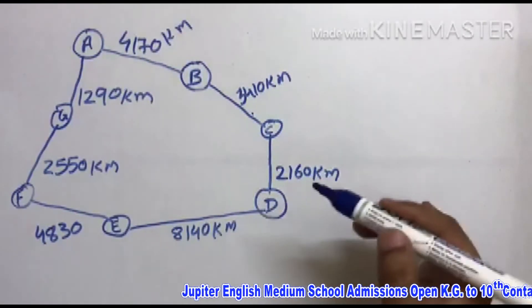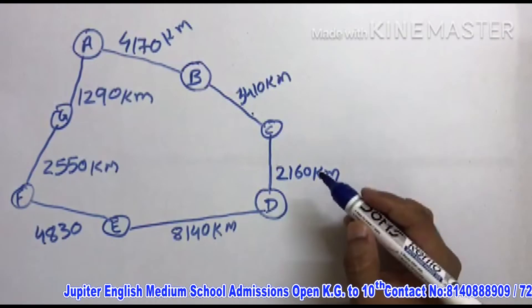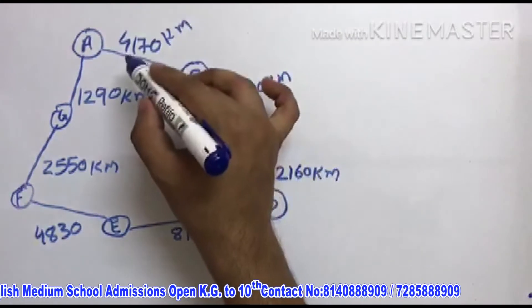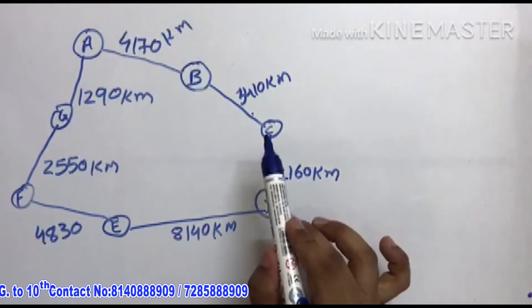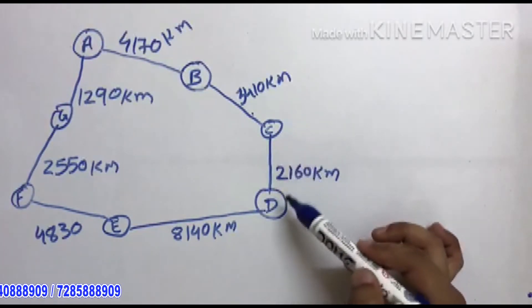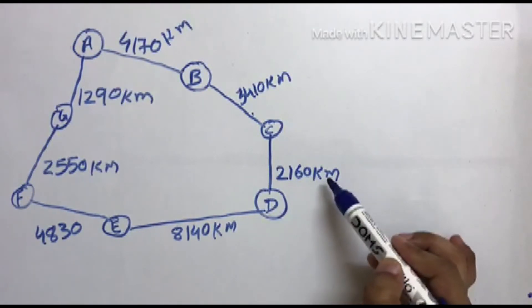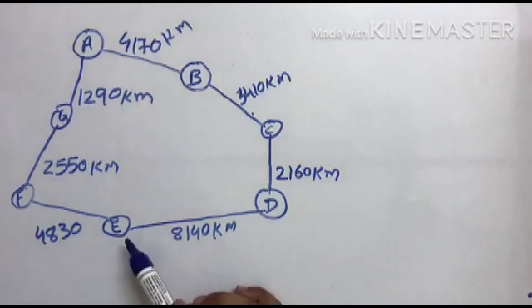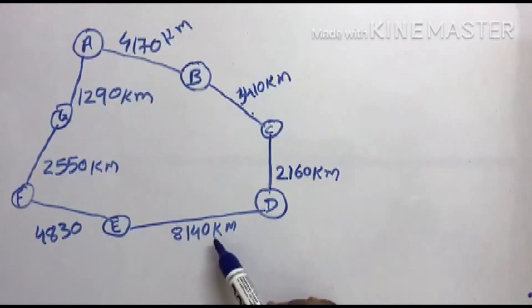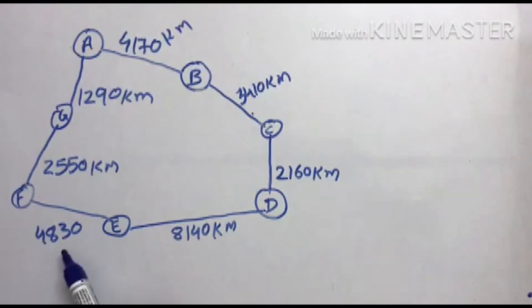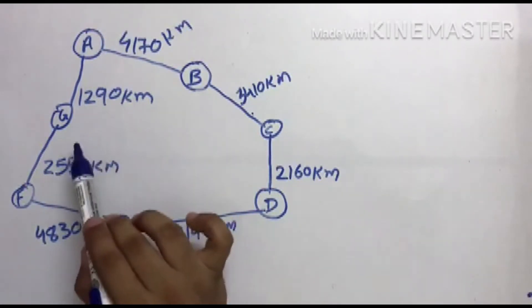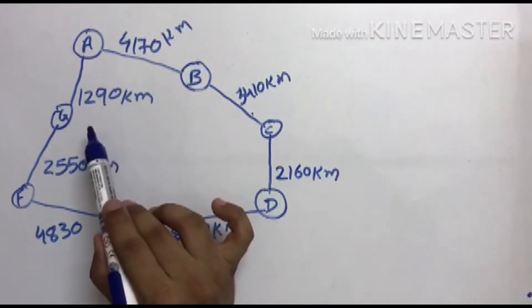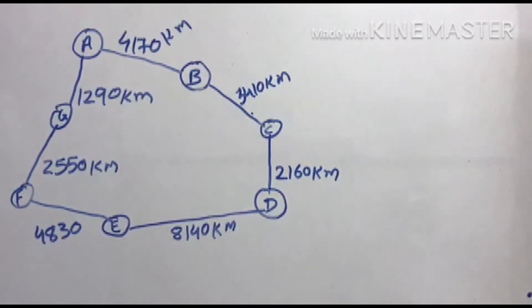So different points से different points पहुंचने के लिए: A से B — 4170 km, B से C — 3410 km, C से D — 2160 km, D से E — 8140 km, E से F — 4830 km, F से G — 2550 km, और G से A — 1290 km. Understood?